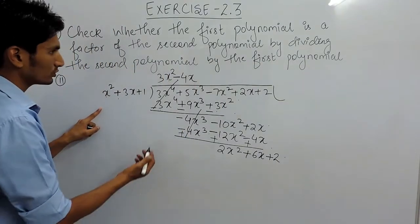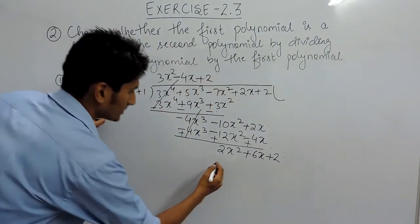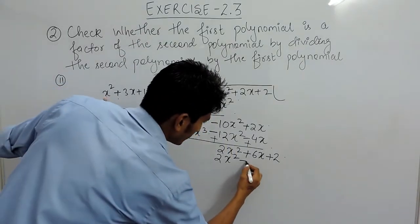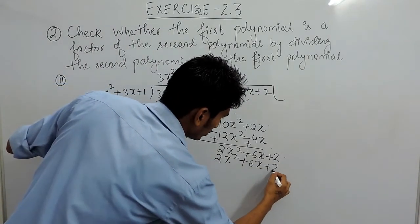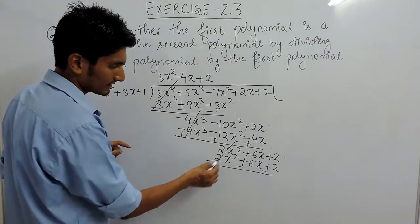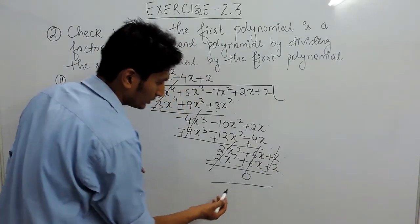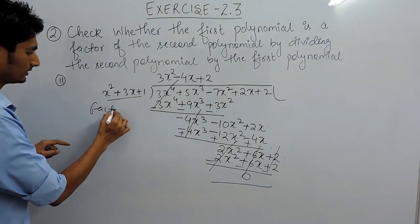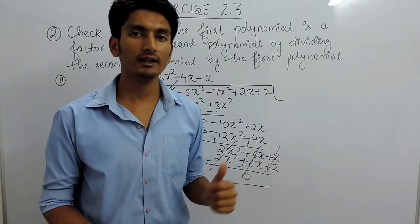Now, you have to make it 2x square. So obviously x square should be multiplied with 2. So, 2 multiplied by x square is 2x square, 2 multiplied by 3 is plus 6x, and 2 multiplied by 1 is 2. If you subtract this, all the plus minus terms are cancelled out. So the remainder here is 0. Obviously, this should be the factor for this polynomial, because it is completely dividing the greater polynomial. Thank you.